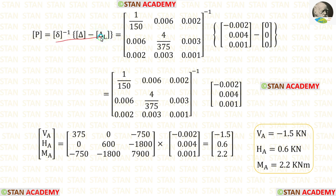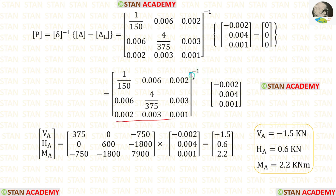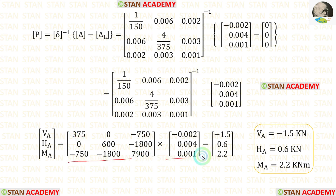In this formula, we have calculated everything. We add the two matrices and then find the inverse of the resulting matrix using a calculator. After multiplying the inverse matrix with the displacement vector, we obtain VA, HA, and MA.